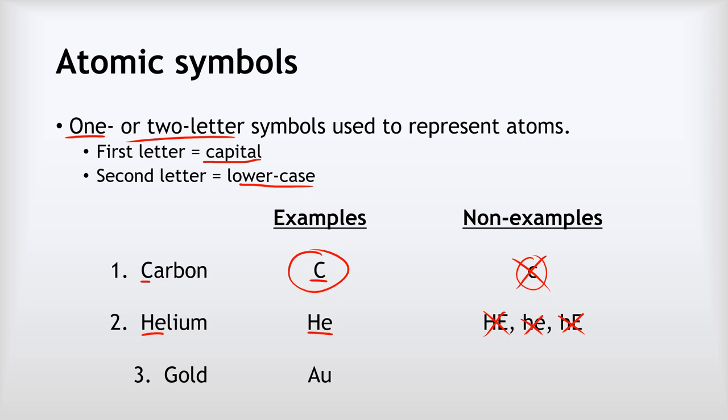Finally we'll look at the example of gold. Gold, its symbol is capital A lowercase u. Nothing to do with the word gold, but it comes from another language because the symbols weren't always developed by English-speaking people. Again, do not write capital A capital U, do not write lowercase, and don't write the backwards mix like that. It can only be correct if it's capital A lowercase u.